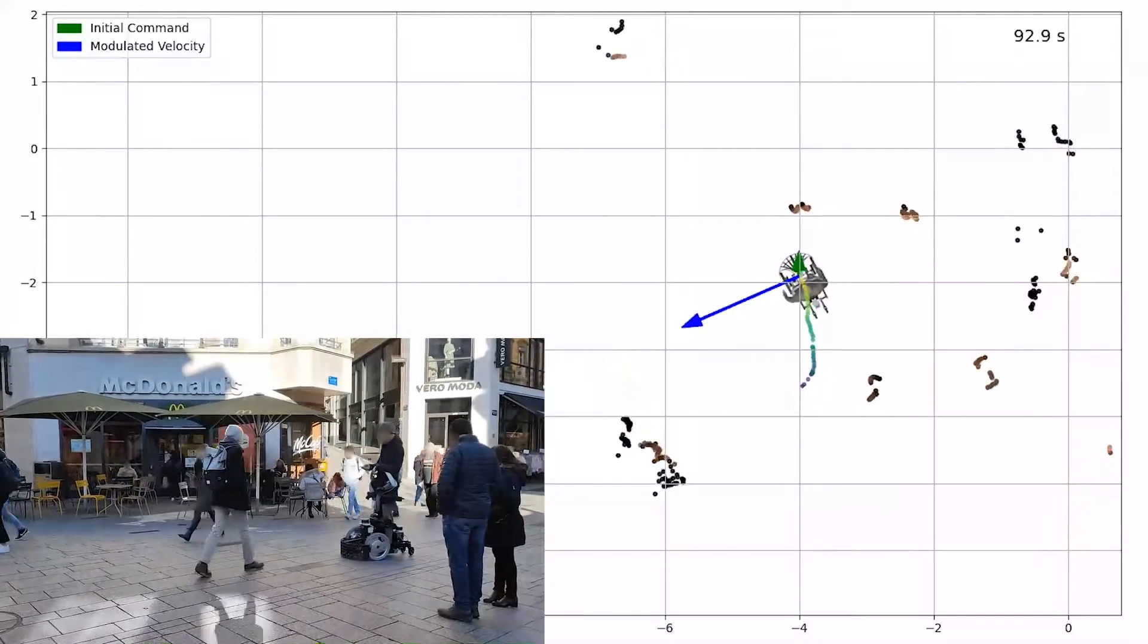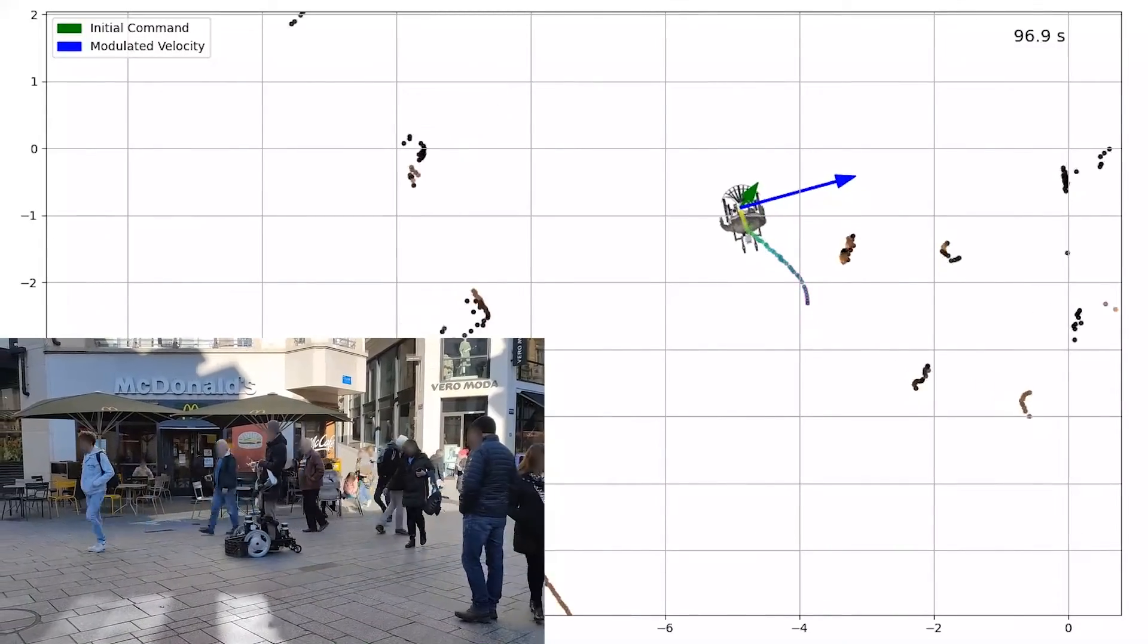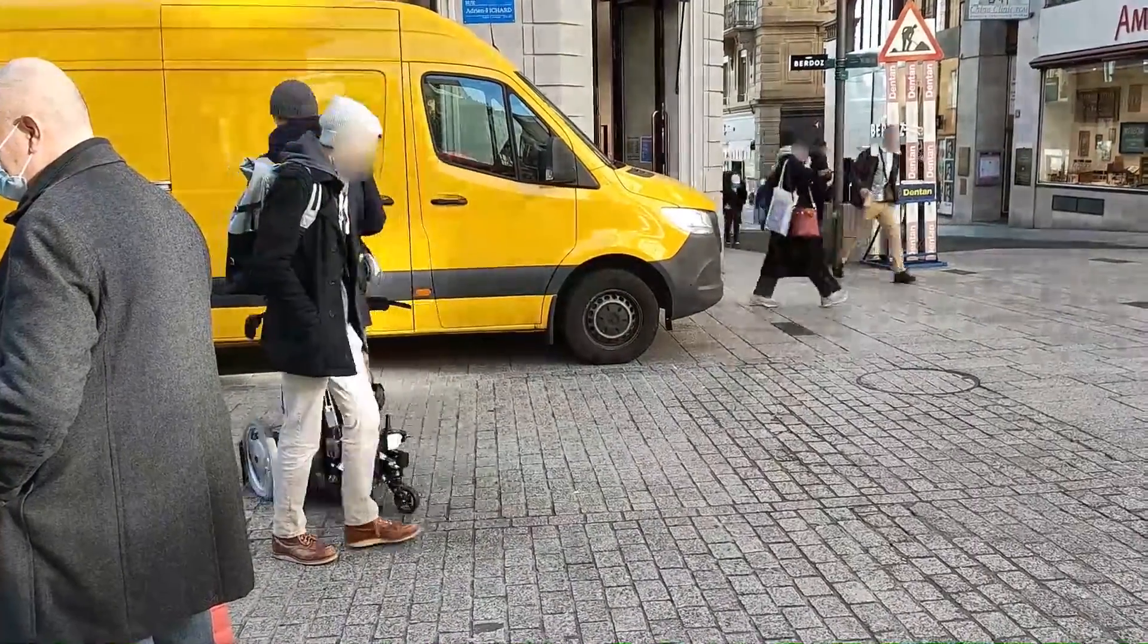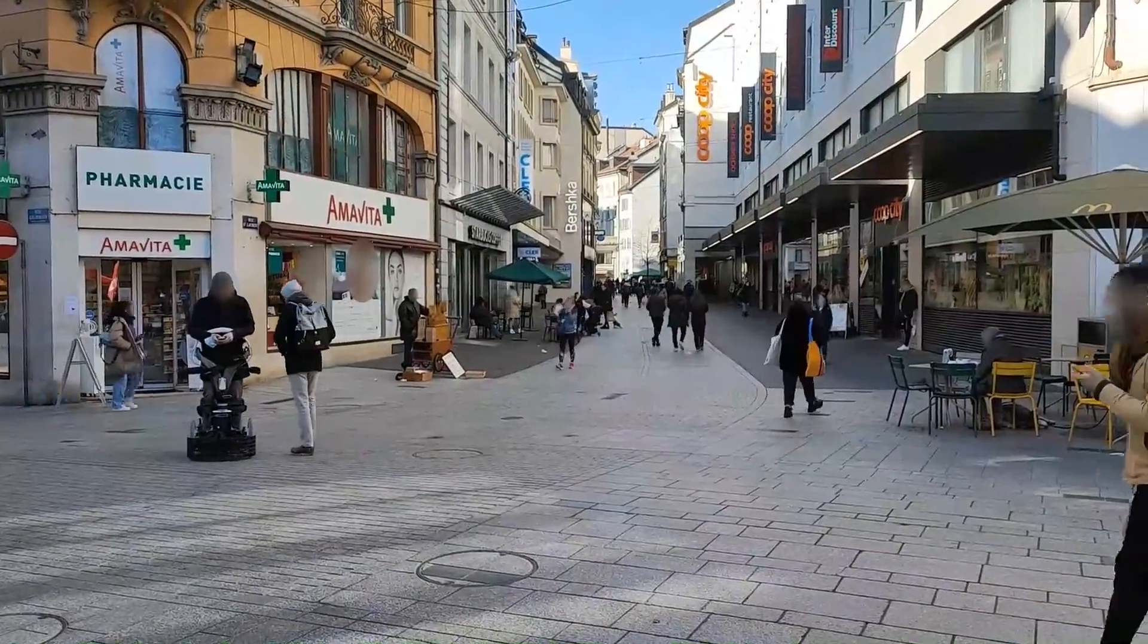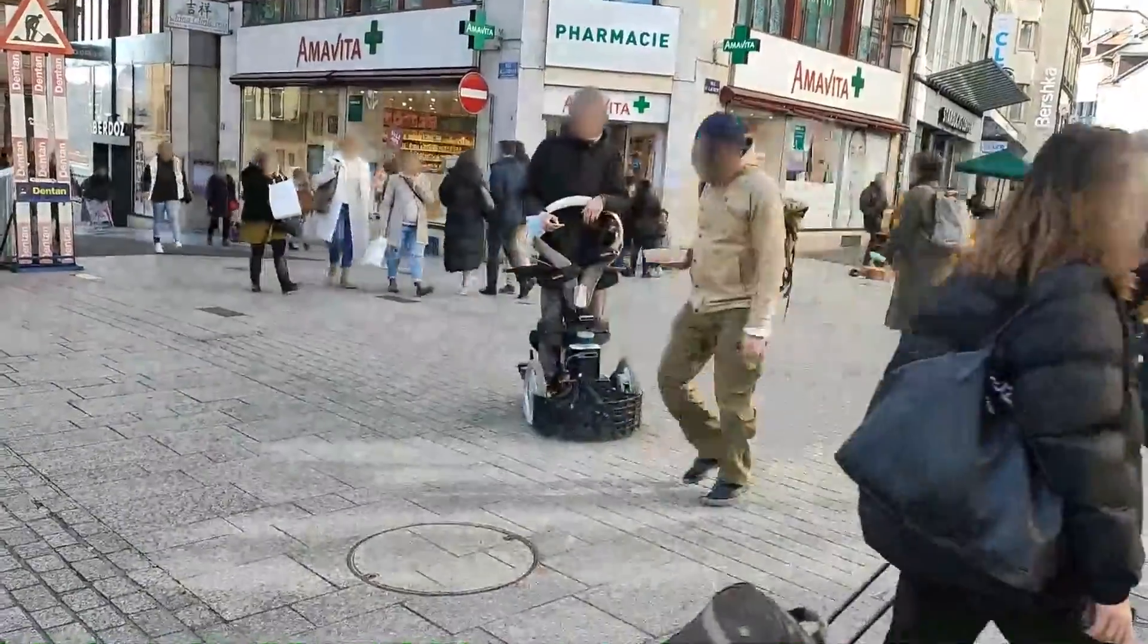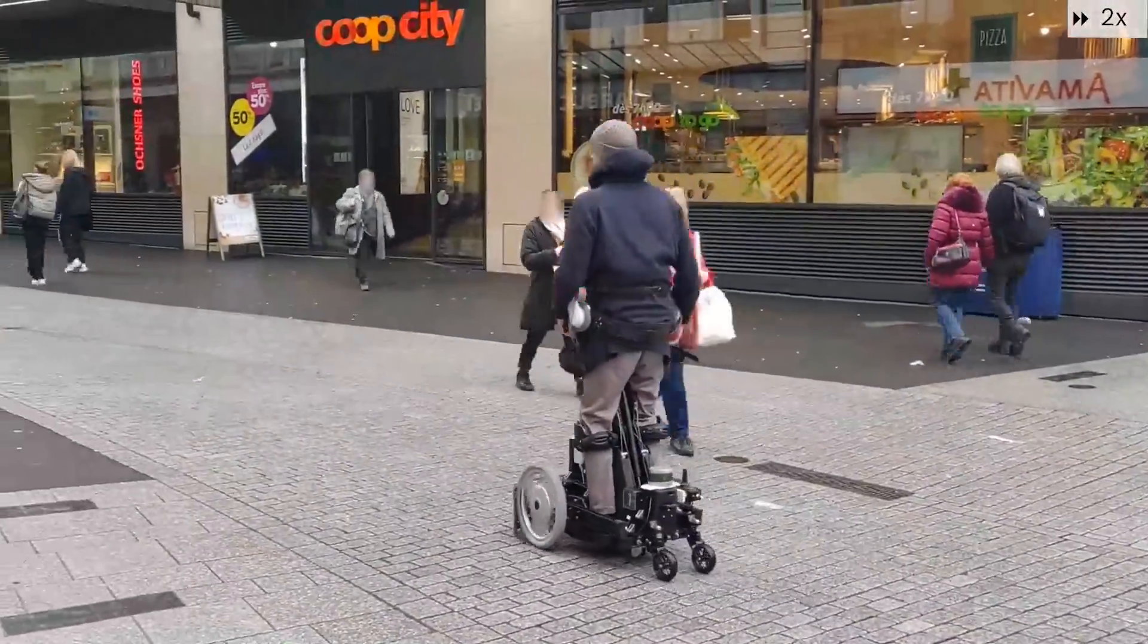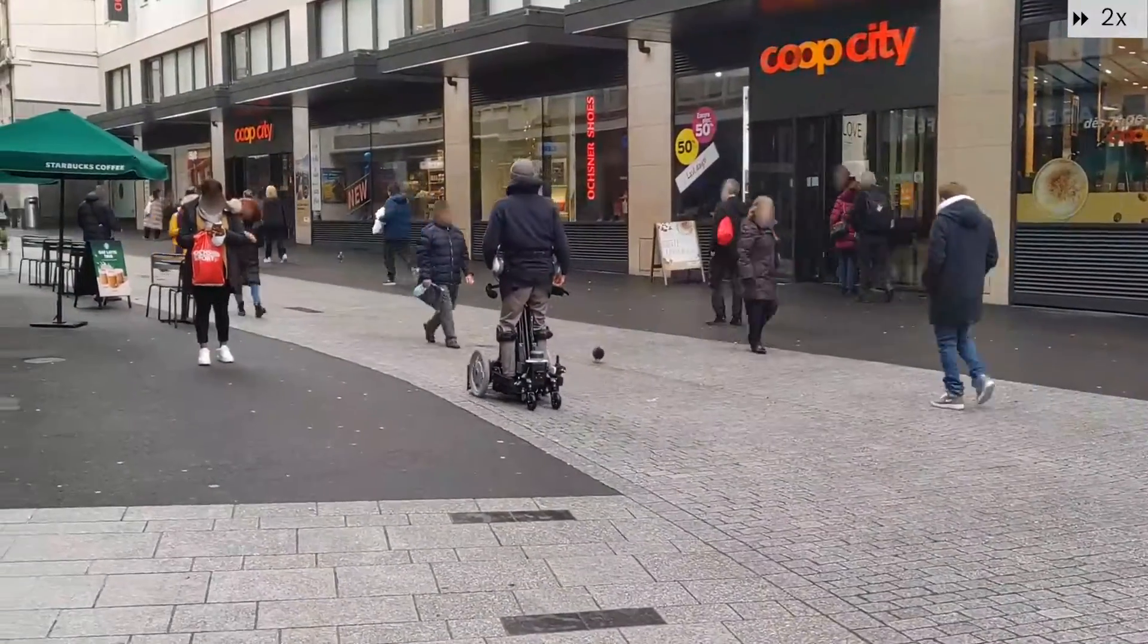The final experimental validation was performed in the city center of Lausanne. The operator was navigating with Qolo up and down a shopping street, and the algorithm was running using LiDAR data only. During the runs, we observed that the contribution of the controller decreases as the robot is further away from objects. But most importantly, the algorithm was able to stop collisions in various scenarios and ensure safe operation in the shared control mode.